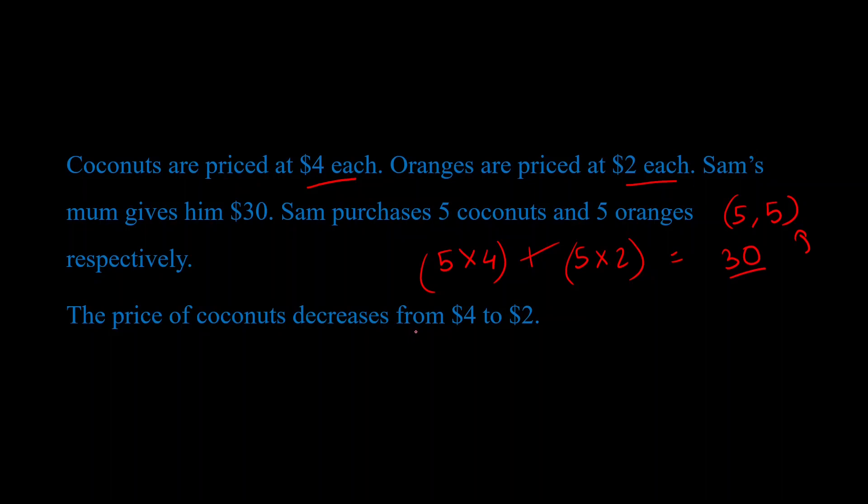And Sam's mom notices that and she's like, you know what Sam, yesterday you bought 5 coconuts and 5 oranges, now the price of coconuts has reduced. So now I'm just going to give you enough money, just enough money, so that you can afford your original bundle. So Sam's mom sits and does some math.